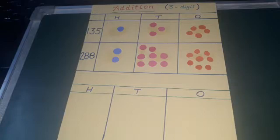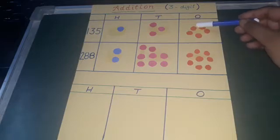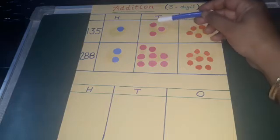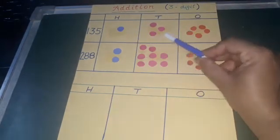So these orange bindis represents ones digits. And here we have 1, 2, 3, 4 and 5. Here 1, 2, 3 and here comes 1. So the number is 135.